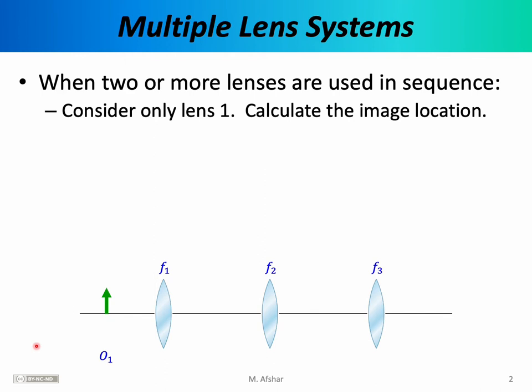It turns out you already know everything you need to know for handling multi-element systems. The trick is essentially to treat each element of the system individually and treat the image of each element as the object of the next element in series.